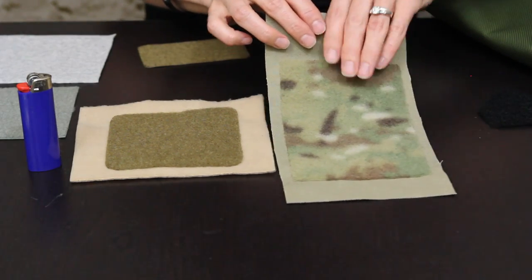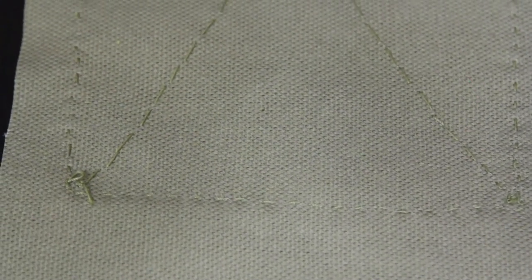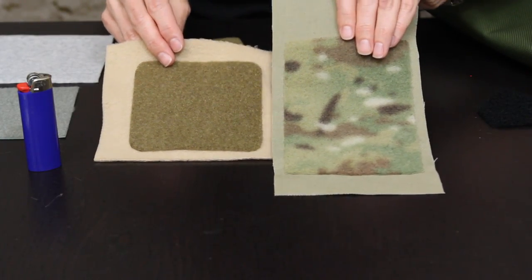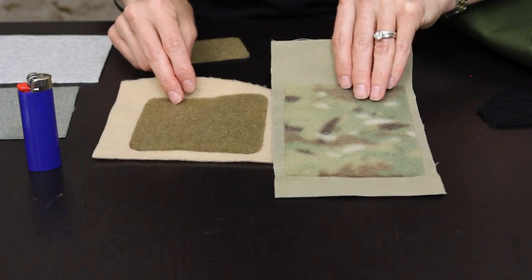So as you can see you really can't tell where the stitch line is and part of that is due not only to the small stitching but also due to the colors of thread that I used.